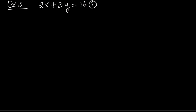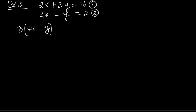Let's try another system using elimination. We're given equation 1: 2x plus 3y equals 16, and equation 2: 4x minus y equals 2. We want to eliminate y. To do that, we'll multiply the second equation by 3: 3 times the quantity 4x minus y equals 3 times 2.